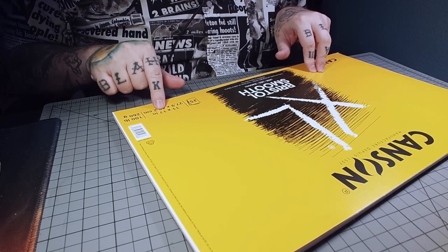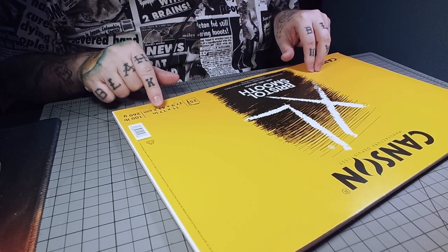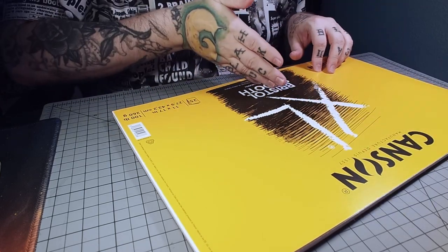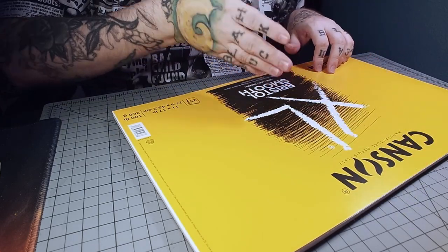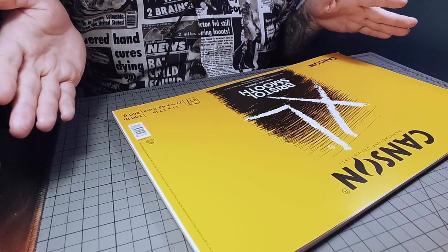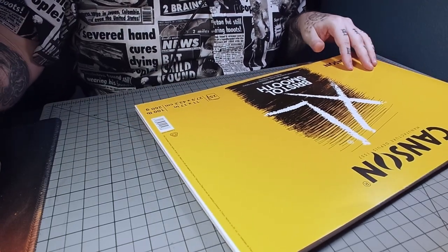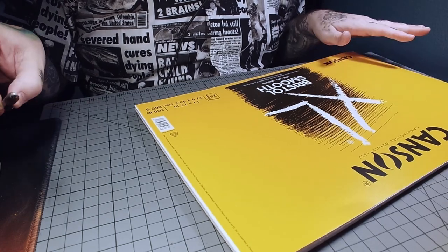I'll go over the supplies you'll need right now. I'm going to be using this Canson Bristol - this is an 11 by 17 pad. I'm going to be cutting one of the pieces in half to give me an 8.5 by 11 sheet.